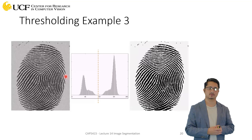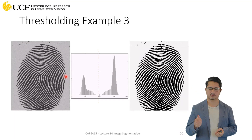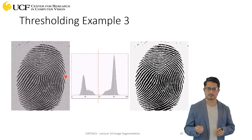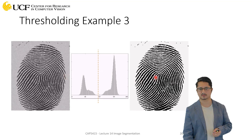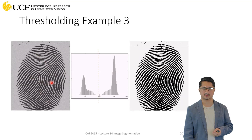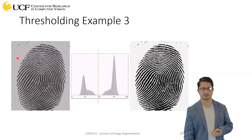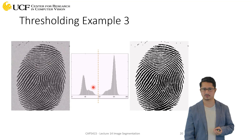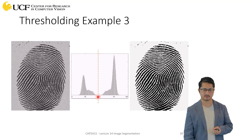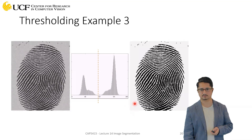A very good application of image binarization is fingerprints. If you perform a clean binarization on a fingerprint image, it becomes very easy to extract features. The input image may have a lot of background noise, and you don't want your algorithm to use those pixel values — so binarization can be a very good pre-processing step. By setting the right threshold, all the grayed-out background pixels are removed.